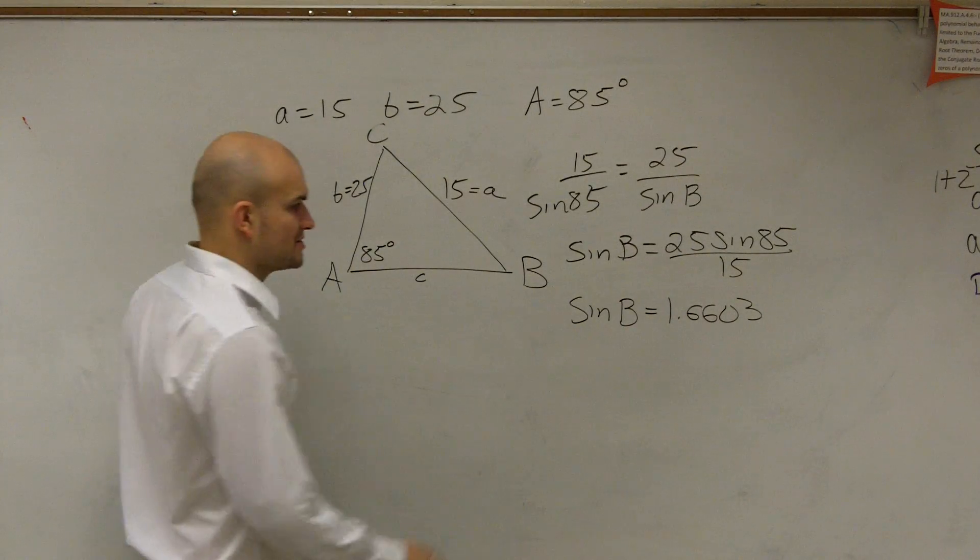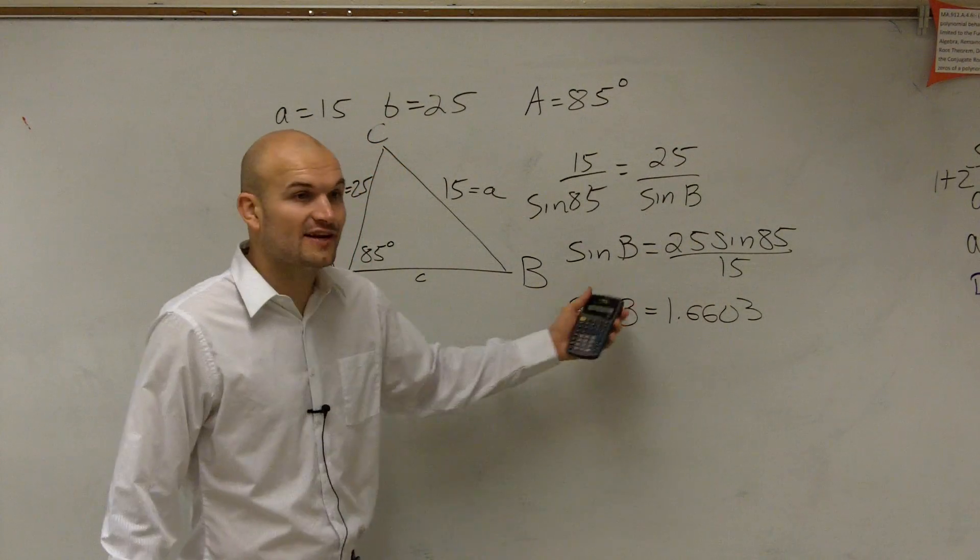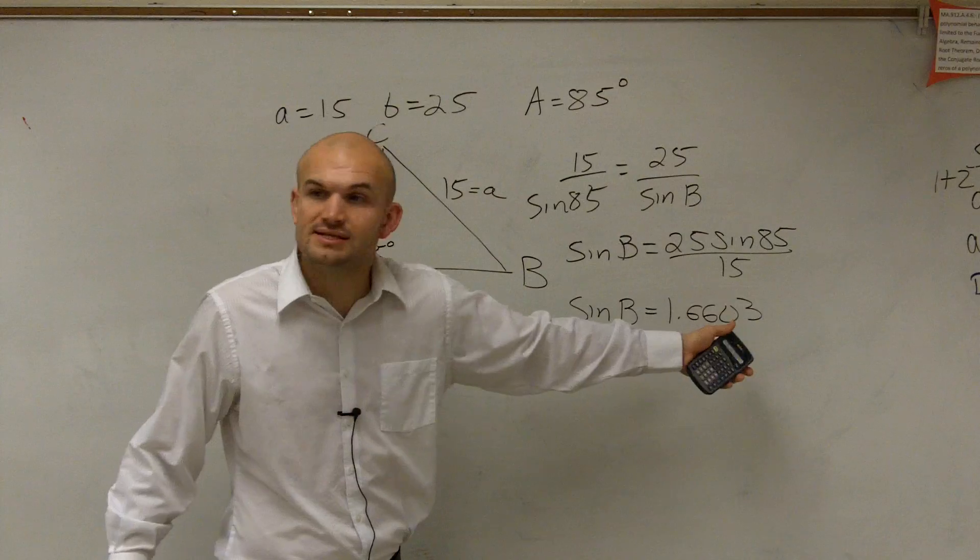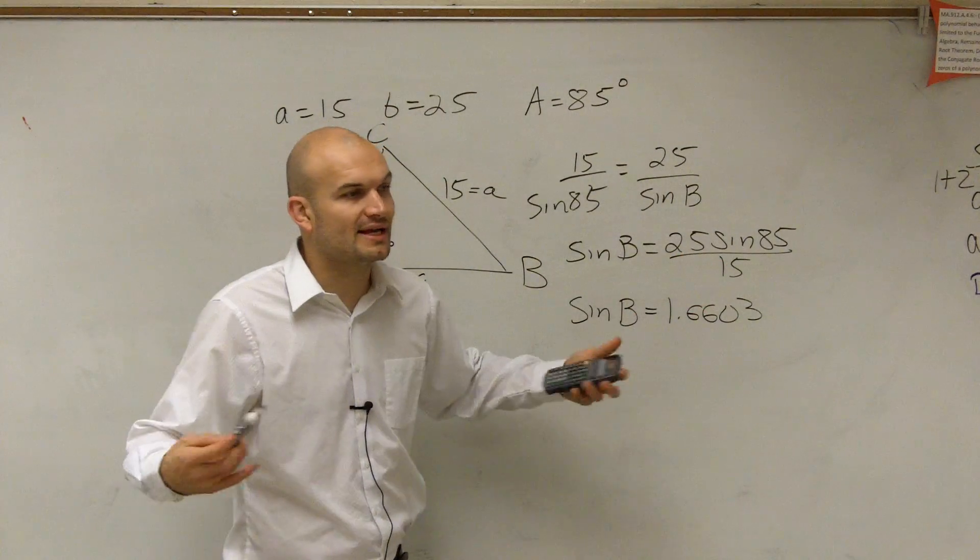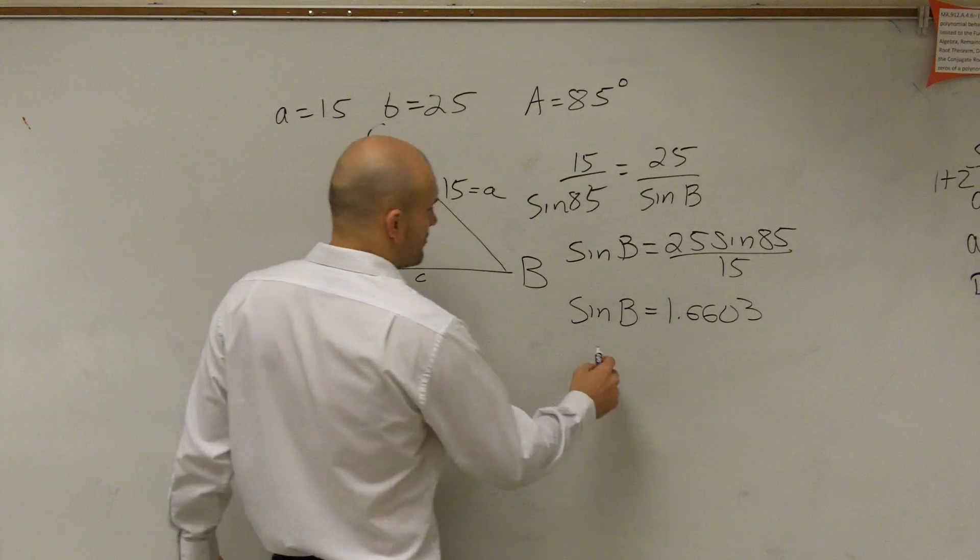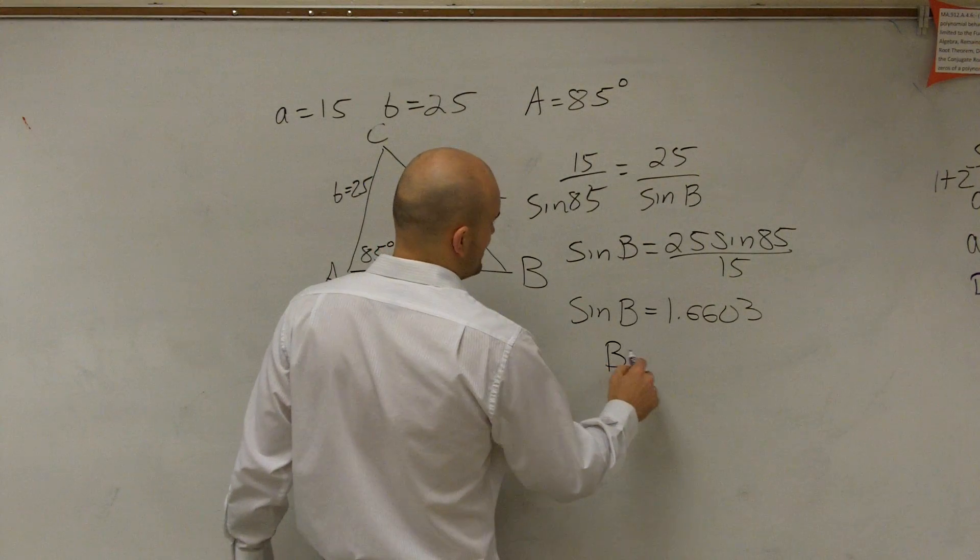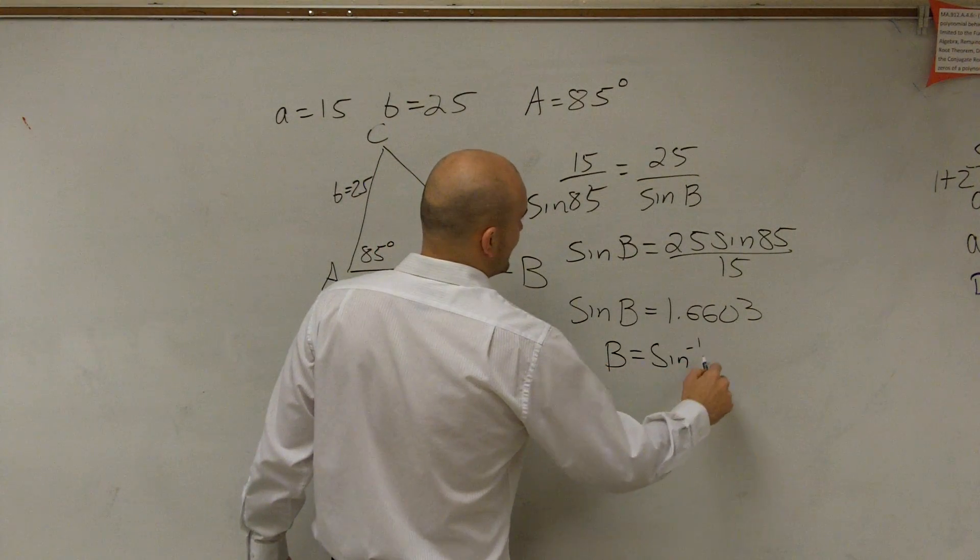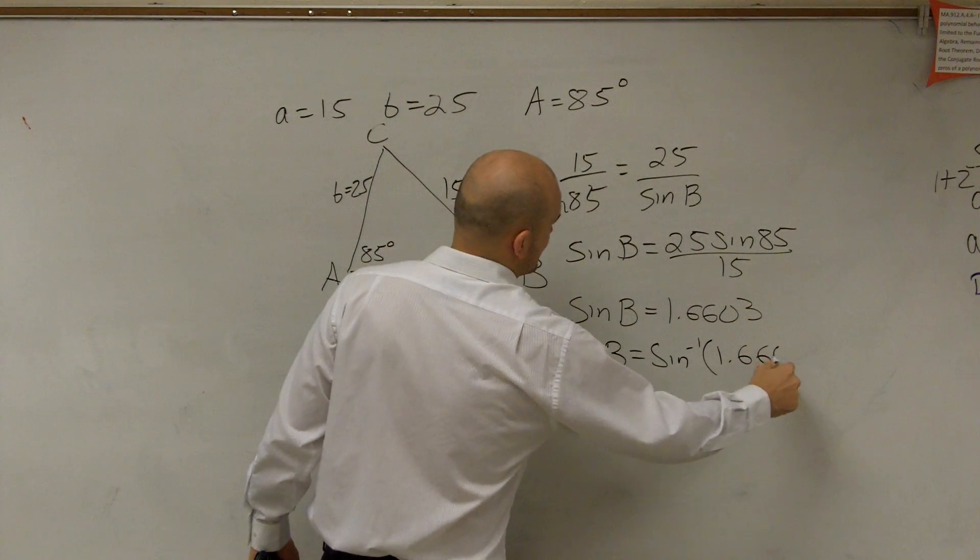So now we need to take the inverse of this, right? To find B, the sine of your angle equals 1.66. So now we need to, again, be able to evaluate for our angle. So we say B equals the sine inverse of 1.6603.